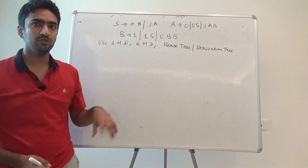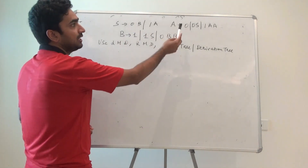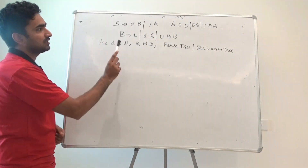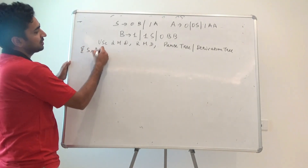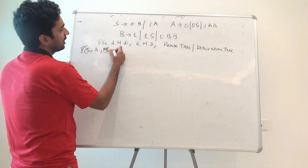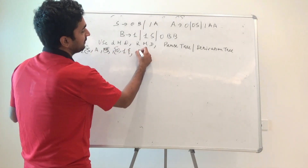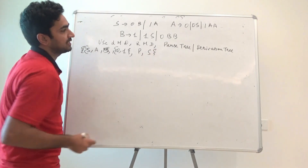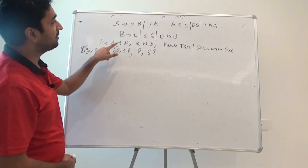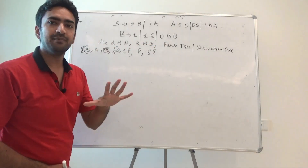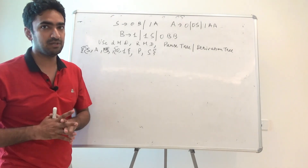The question given to us has: S → 0B | 1A, A → 00S1AA, B → 11S0BB. So there are three non-terminals — S, A, B — and two terminals. The starting symbol is S. I have written LMD for left-most derivation, RMD for right-most derivation, and parse tree for the derivation tree I will be constructing. Please watch the video till the very end.